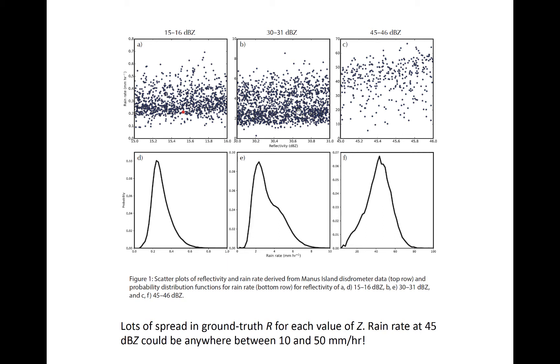Thus, instead of reporting rainfall as some median or mean value that is like at the peak of the distribution, it can be reported as a probability distribution function, or PDF.